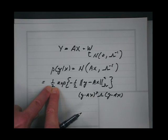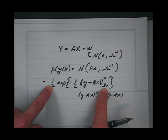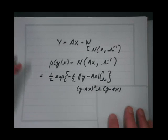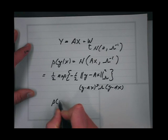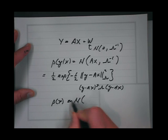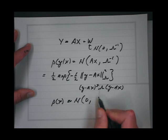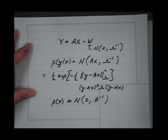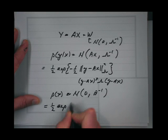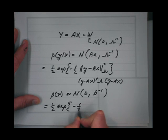I can always calculate the normalizing constant Z because it's only going to be a function of lambda, the covariance. And then I have some sort of distribution for x — it's going to be normal with mean zero and covariance v inverse, where v is the precision matrix. So that's going to be equal to one over Z times exponential of minus one half x-transpose v x.